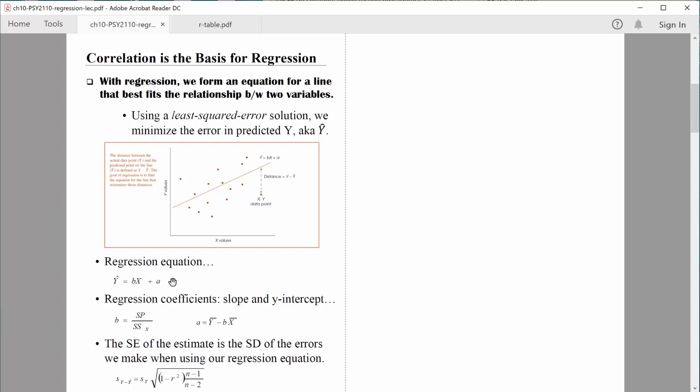Let's make sure we just are all speaking the same language so we know what b and what a stands for. First of all, we call those regression coefficients. Remember, coefficients are just numbers. b is the slope of the line. It's also sometimes referred to as the b weight. And a is the y-intercept.